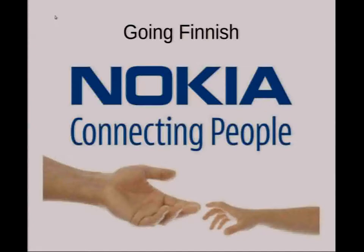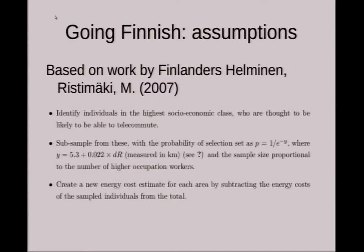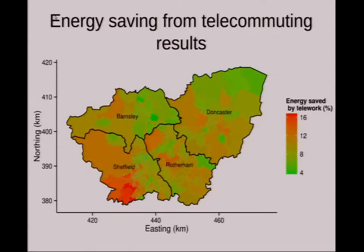So cycling can't deliver as big a benefit as we were hoping in terms of energy. The next scenario was telecommuting — something that's happening increasingly already. Taking another European country as an example, because so many people telecommute in Finland, it's almost a field of academic study in itself. I took assumptions directly from a study by Finnish researchers. The spatial distribution is very different from the cycling scenario. It's not only in areas away from the city centre where you have highest energy use — it's in very wealthy areas, because Finnish data suggests that people most likely to telecommute are in the top social classes.